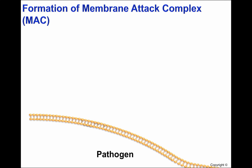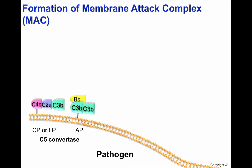In order to form the membrane attack complex, the C5 convertase C4B, C2A, C3B of the classical and lectin pathway, and the C5 convertase of the alternative pathway C3B, BB, C3B, will cleave C5 in order to generate C5A, an important chemoattractin and pro-inflammatory molecule.